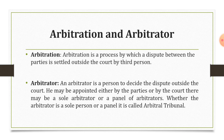The very first topic is arbitration. One must understand and know the meaning of arbitration. Arbitration is a process by which a dispute between the parties is settled outside the court by a third person. That third person is called an arbitrator. An arbitrator is a person who decides the dispute outside the court. He may be appointed either by the parties or by the court. There may be a sole arbitrator or a panel of arbitrators. Whether the arbitrator is a sole person or a panel, it is called an arbitral tribunal.